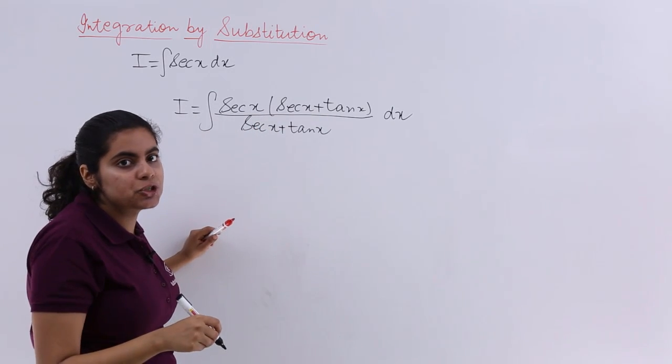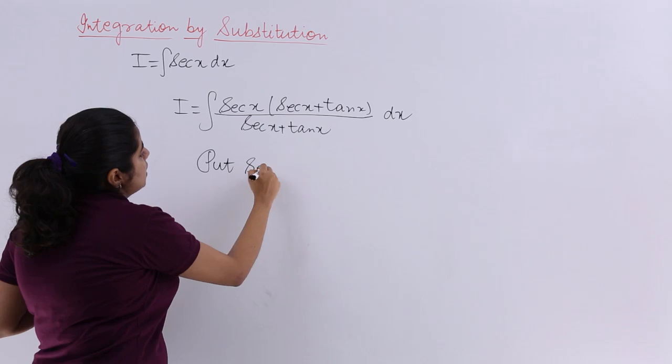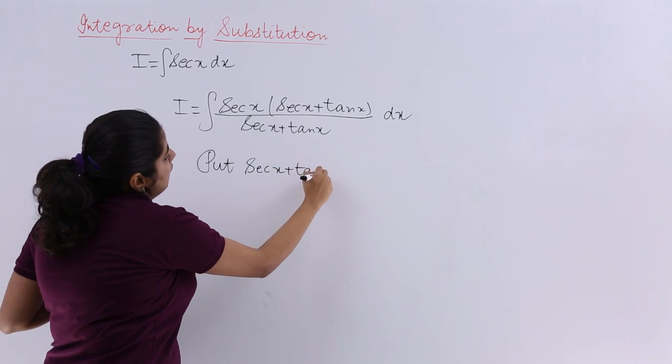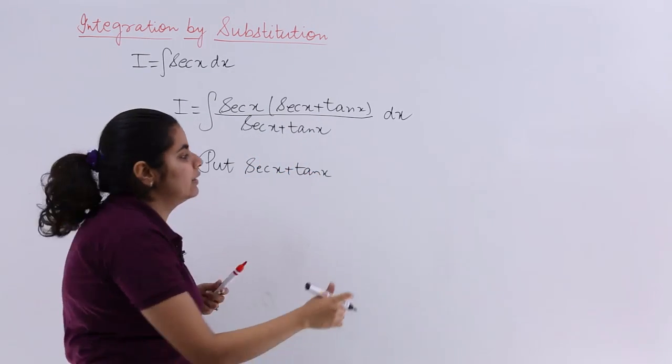Now see your substitution. Suppose I write: put sec(x) plus tan(x), that is the denominator, equal to t.